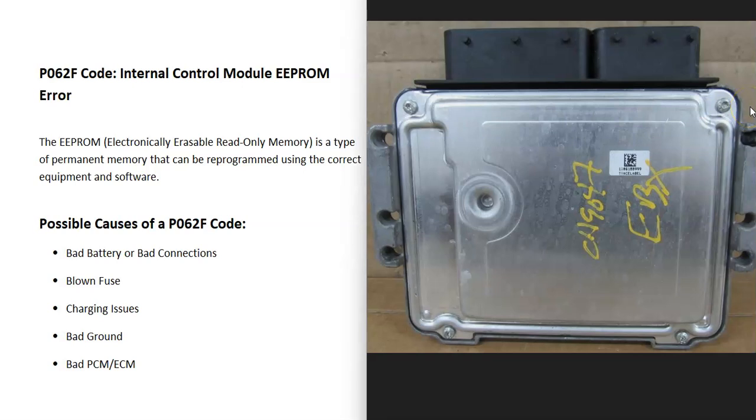Modern vehicles have computers inside of them called modules. There can be an engine control module, a powertrain control module. There's a type of memory that can be written to and stores programs called EEPROM. This can hold the programming for the computer module and different things. For some reason, the control module is seeing a problem with this. It's not able to read this memory, and so it's going to have to be troubleshooted to know why.